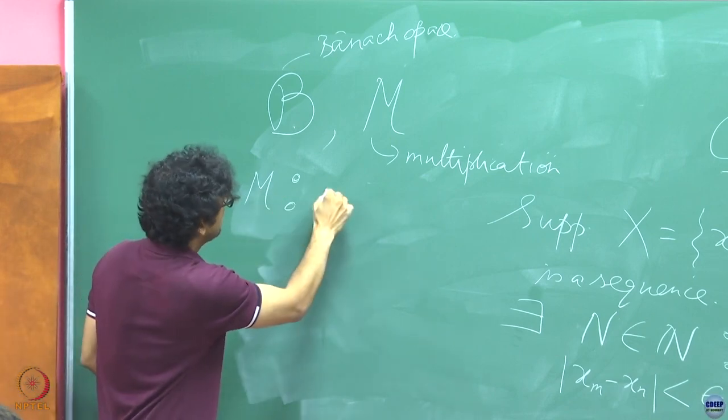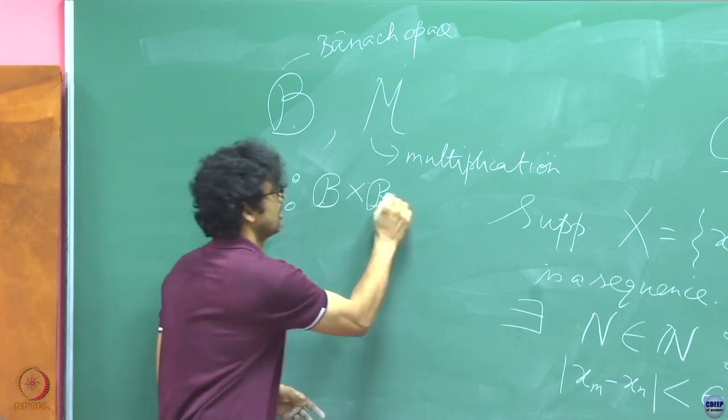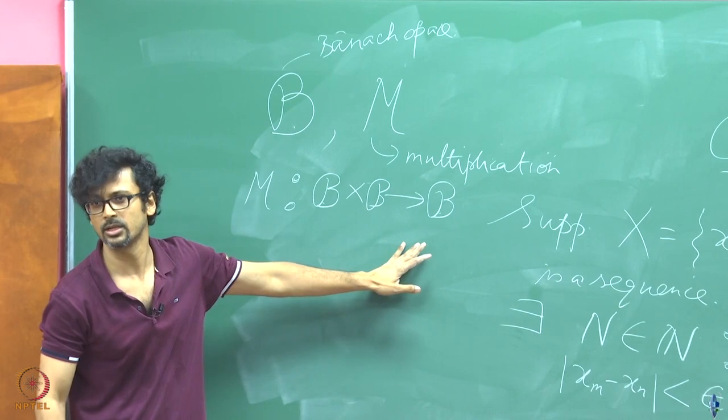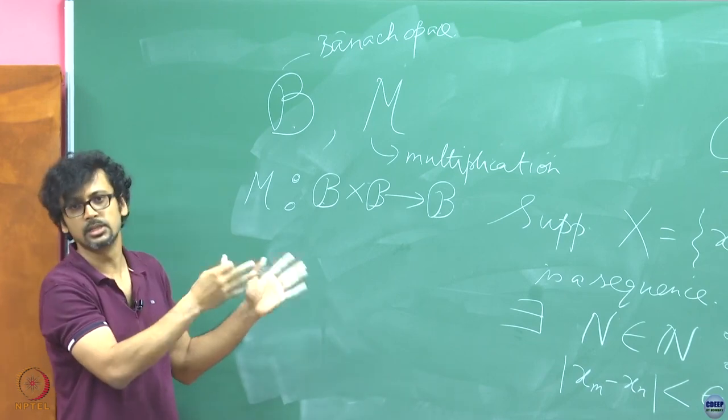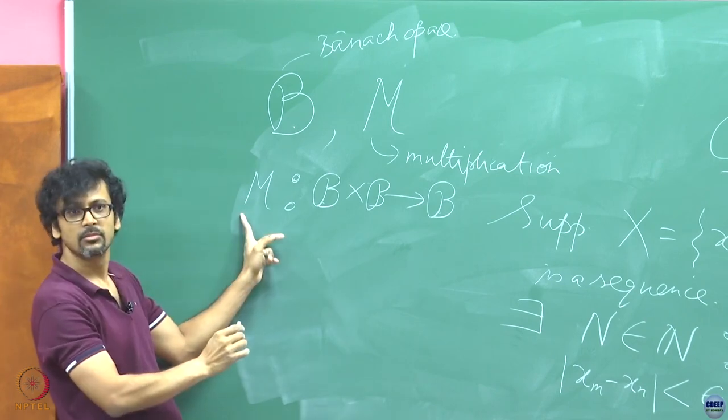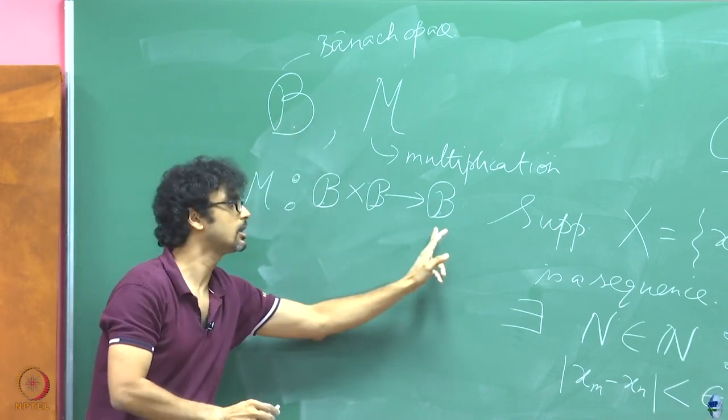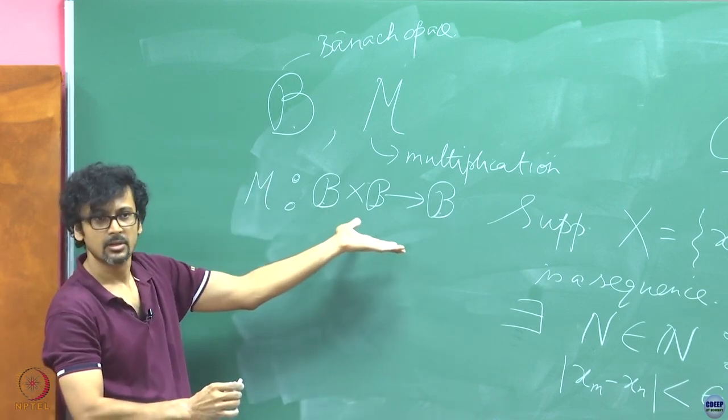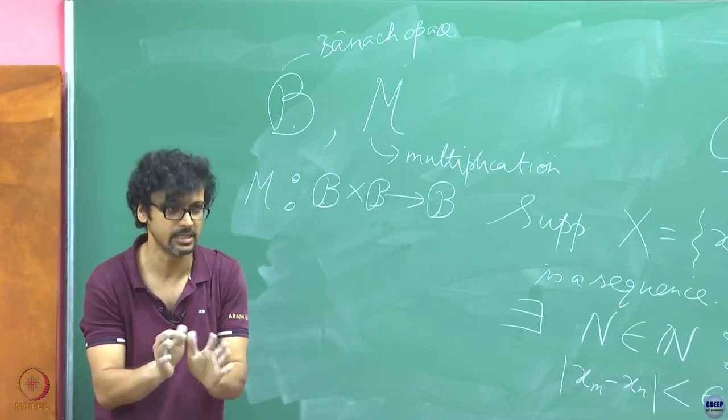That is all that this symbol means. Do not read too much into it. Just try and understand this. I am just trying to give you a light introduction to some of the symbols and things that we shall be using. What this means is that this is an operation that acts on two objects of this set at a time and spits out another object in that set. In general it could be a set. Here it is a Banach space. So this multiplication operation, when you define on a Banach space, so of course in a Banach space there is already an addition that is sitting, that addition operation is there.